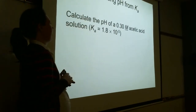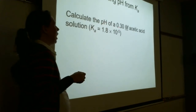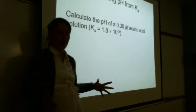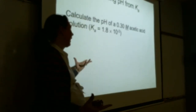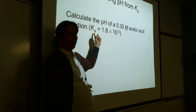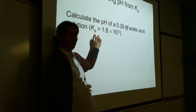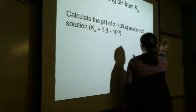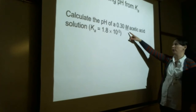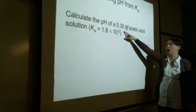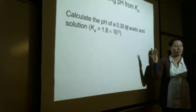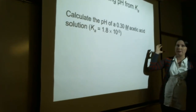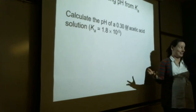Let's do this one together: calculate the pH of a 0.3 molar acetic acid solution. On a test, if you need a Ka value, I'm going to give you a reference page — I'm not going to make you memorize Ka values. Now if this were a strong acid like 0.3 molar hydrochloric acid, you'd just say negative log of 0.3 and be done. But acetic acid is a weak acid, which means it's reactant favored, so we have to make an ICE table.